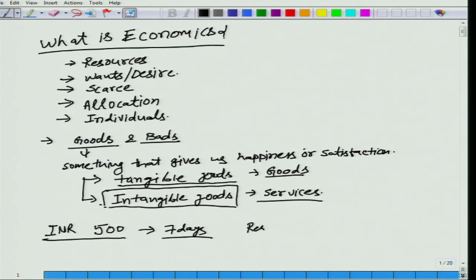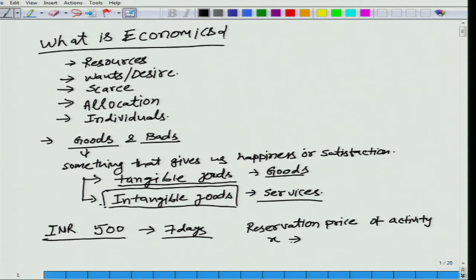Let me define the term reservation price of activity X. The reservation price of activity X is the price at which you would be indifferent between opting for X or not opting for X. In our example, X is going to jail, and 50,000 rupees is the reservation price — at that level you are indifferent between the two options.